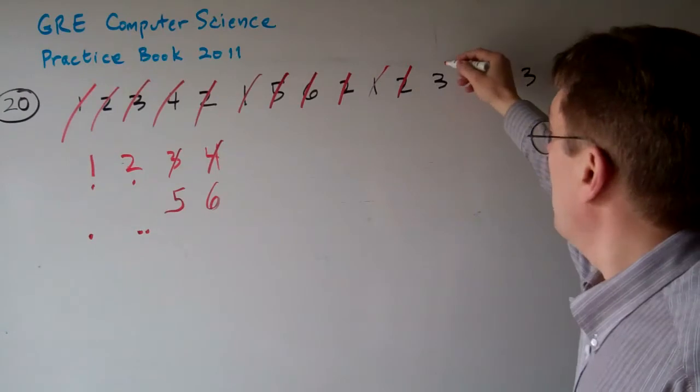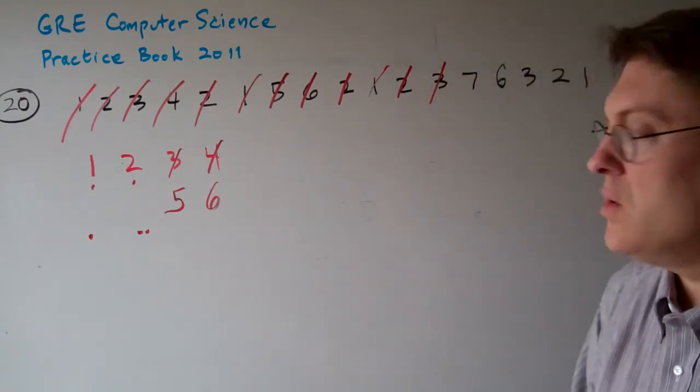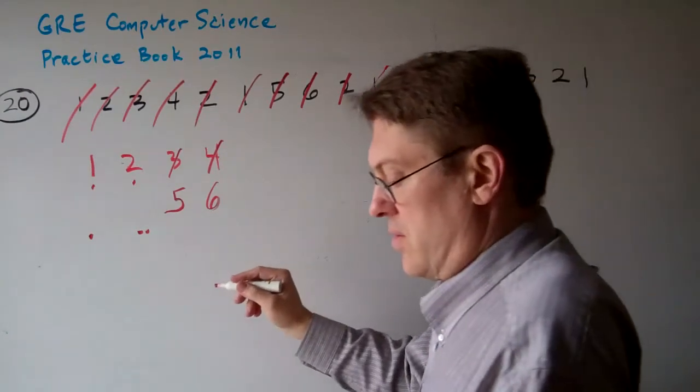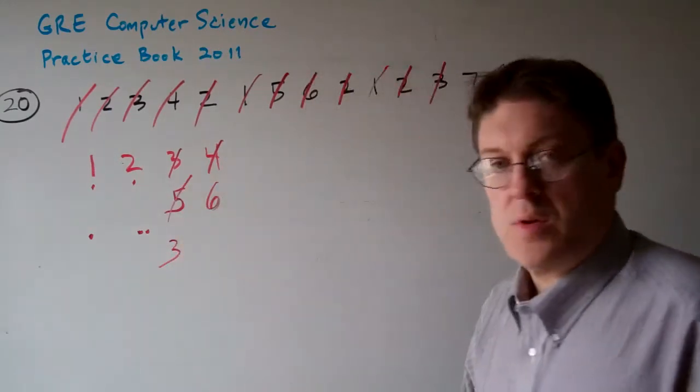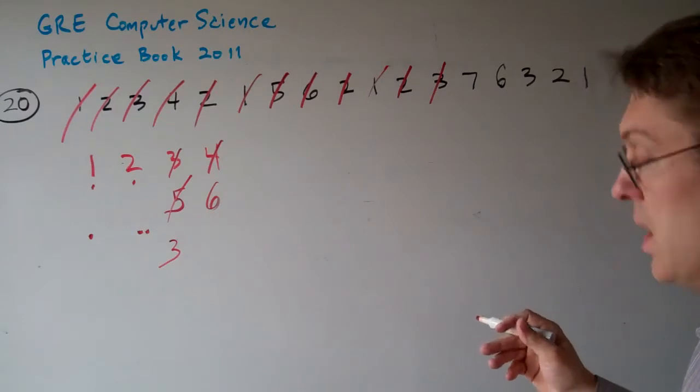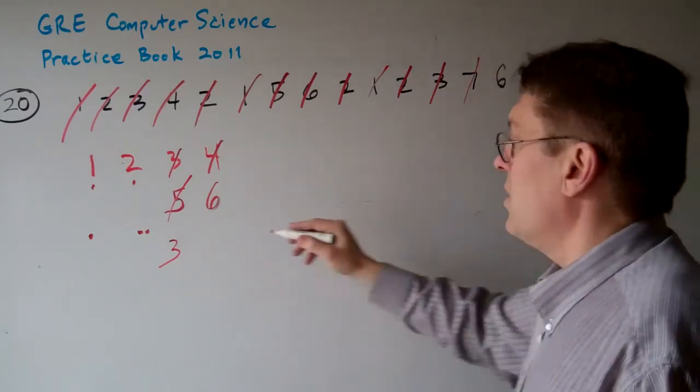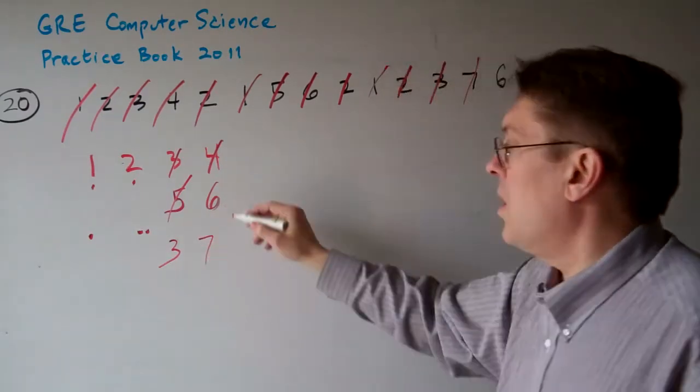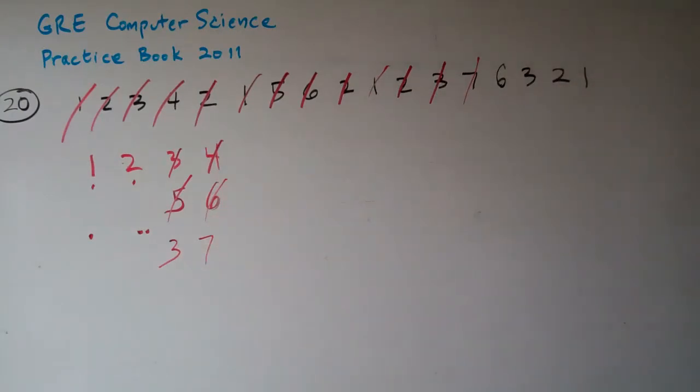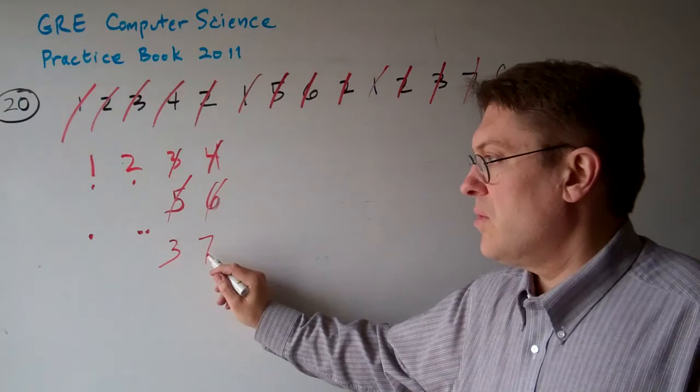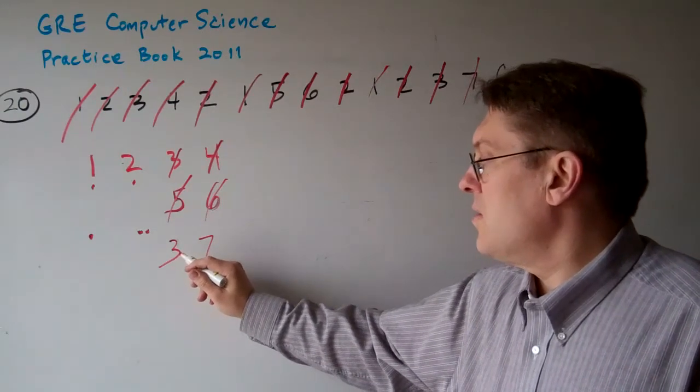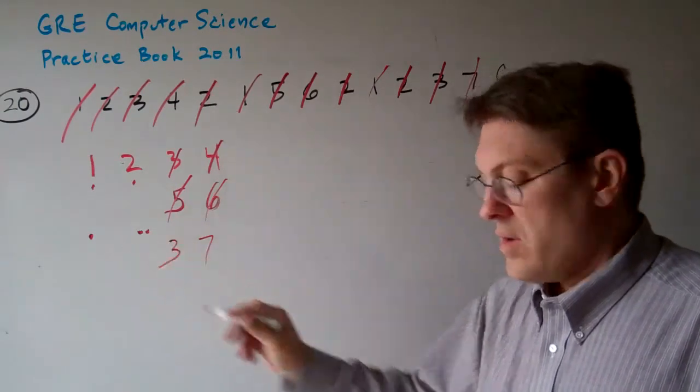And now three comes back into play. Well, what's the oldest one that's been there? The five is the oldest one, so we throw out the five and put the three back in there. Now the seven comes into play. Well, now the six is the oldest one. So that's out of there now. This is the most recently used, and this is the next most, and so on.